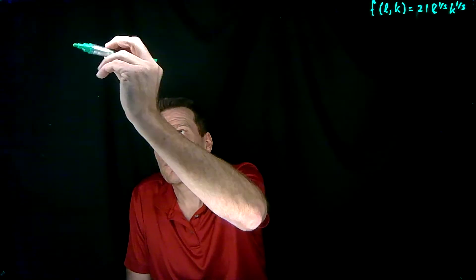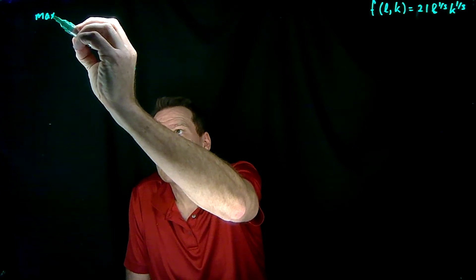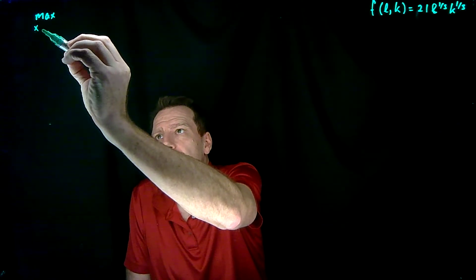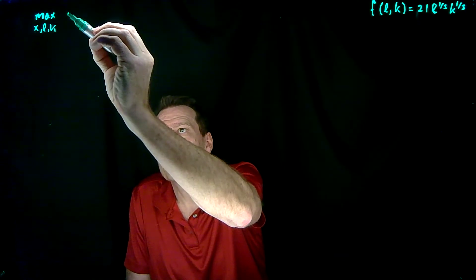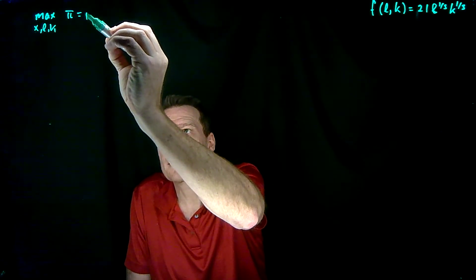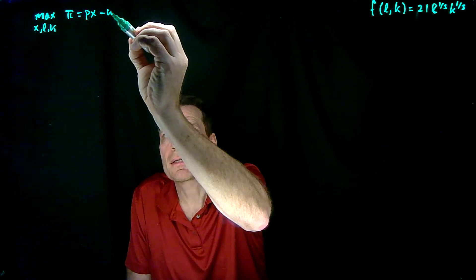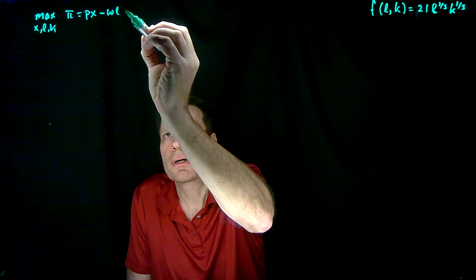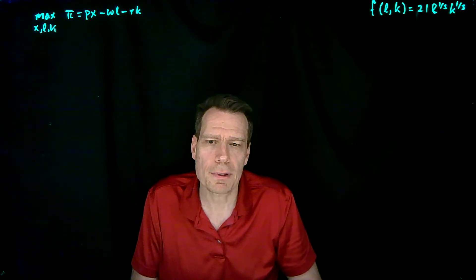The long-run profit maximizing problem is now the following. We want to maximize, choosing a production plan X, L, and K, profit — where profit is price times output (that's the revenue), minus the labor costs, minus the cost of capital: the rental rate times the amount of capital we choose.